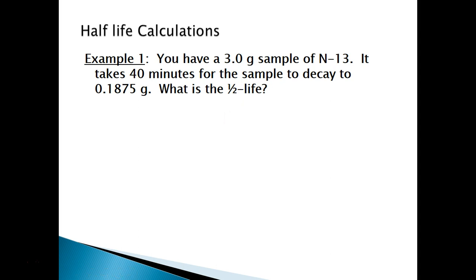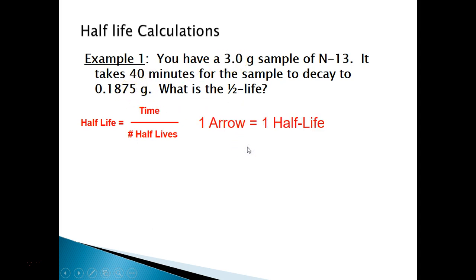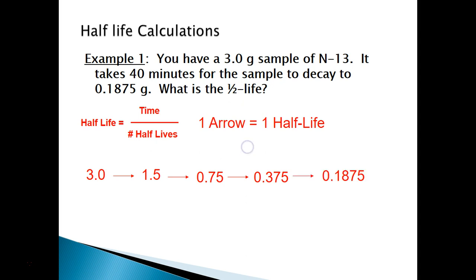You have a 3-gram sample of nitrogen-13 that takes 40 minutes to decay to 0.1875 grams. What is the half-life? We know the time is 40 minutes, so we need the number of half-lives. Starting at 3 g: after one half-life → 1.5 g; after two → 0.75 g; after three → 0.375 g; after four → 0.1875 g. So it took 4 half-lives. Half-life = 40 ÷ 4 = 10 minutes.